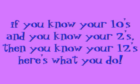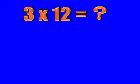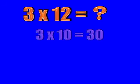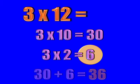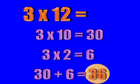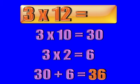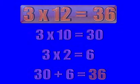If you know your 10s and you know your 2s, then you know your 12s. Here's what you do. For example, if you're multiplying 3 times 12, first multiply 3 times 10, which is 30. Then multiply 3 times 2, which is 6.